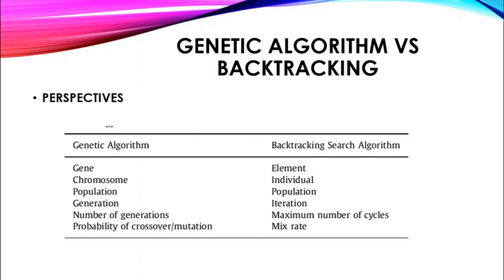From a perspectives standpoint, as you can see in the table: genetic algorithm has gene while backtracking has element; genetic algorithm has chromosome while backtracking has individual. Populations are the same. Genetic algorithm has generation while backtracking has iteration. Genetic algorithm uses number of generations while backtracking uses maximum number of cycles. Genetic algorithm has probability of crossover and mutation, while backtracking has no such random-based operations. Genetic algorithm uses a probabilistic method and backtracking uses a deterministic method.